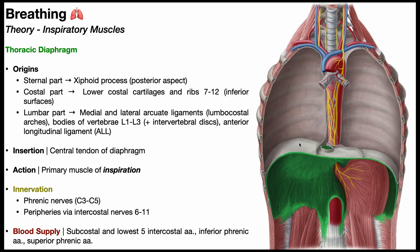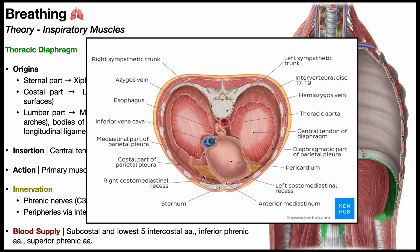Each hemidiaphragm has three individual parts: a sternal part, a costal part, and a lumbar part. What you're seeing here is a cross-section of the diaphragm — the superior part has been removed and you're looking inferiorly at the top surface. The thoracic vertebrae are posterior, the sternum is anterior. This red meaty tissue is the muscular part of the diaphragm — the left and right hemidiaphragms.